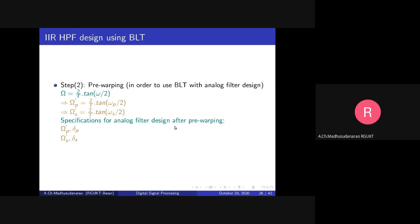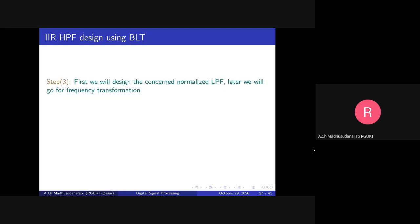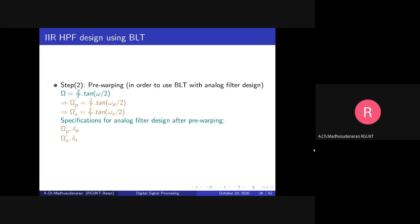The specifications for the analog filter design after pre-warping will be omega_p', delta_p, omega_s', delta_s — this step is called pre-warping. Now our target is to design an analog high pass filter with these pre-warped specifications. Once you have the analog high pass filter H(s) with these specifications, you can simply apply s equals (2/T) times (1 - z^(-1)) / (1 + z^(-1)) to get the corresponding digital high pass filter.